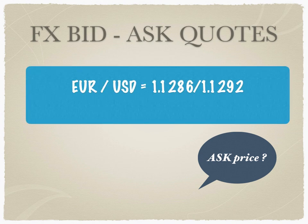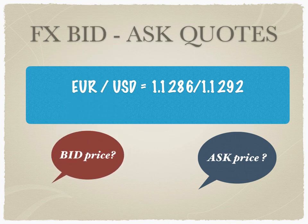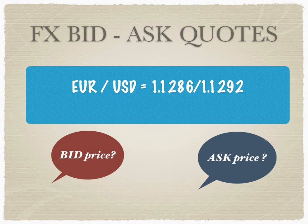In FX bid-ask quotes, let's take an example. EURUSD is quoted as 1.1286 / 1.1292. In FX markets, rates are quoted as a bid and an ask. The price taker goes and asks the price maker — that is, the market taker asks the market maker — for a quotation. The market maker gives a quotation of EURUSD = 1.1286 / 1.1292.